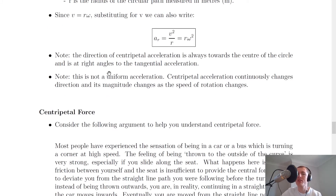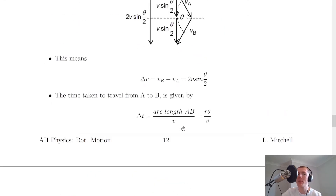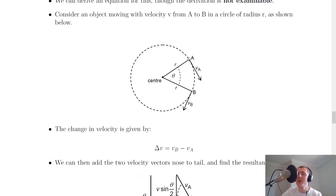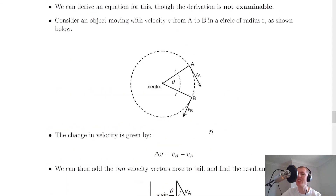A couple of last things to note: the direction of centripetal acceleration is always towards the centre of the circle and is at right angles to the tangential acceleration. If our object is at point A, the centripetal acceleration acts towards the centre of the circle at that point — that's what keeps it in circular motion. The tangential acceleration at point A is in the same direction as velocity VA, while the centripetal acceleration acts at right angles to that, towards the centre.